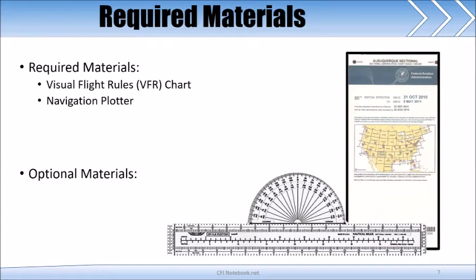Next, you will need a navigation plotter. It is in effect a ruler and a protractor combined into one, and is the protractor aspect that we are most concerned with with regards to true course.